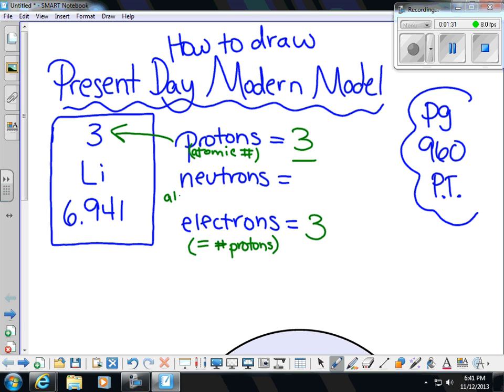For neutrons, we have to take the atomic mass, round it to the nearest whole number, and subtract the atomic number. The atomic mass is here. We look at this digit after the decimal. If it is higher than 5, that means we round up. So 7 is our atomic mass. We subtract the atomic number, which is 3, which gives us 7 minus 3 equals 4 neutrons.